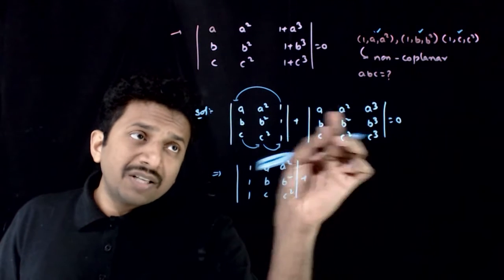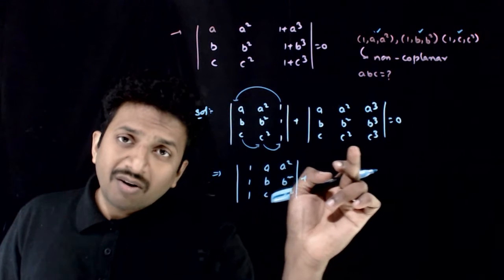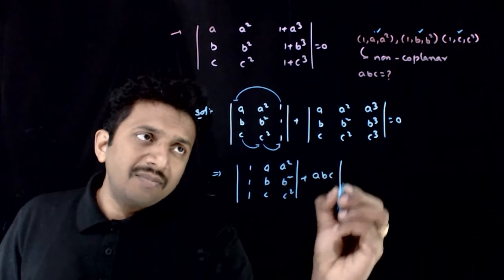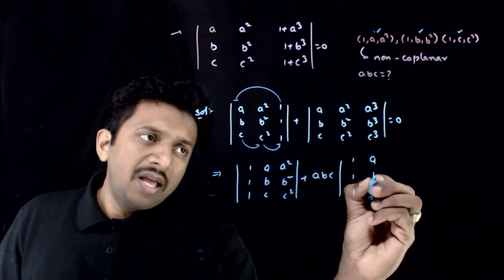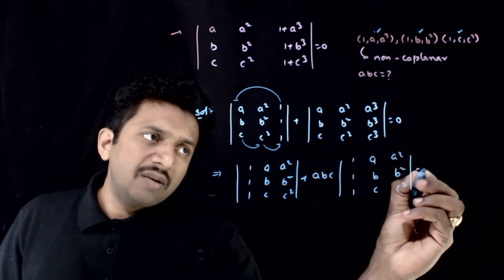So, from this determinant, from the first row I can take an A common, from the second row I can take B as common, from the third row I can take C as common. So, A, B, C times, 1, 1, 1, A, B, C, A square, B square, C square is equal to 0.